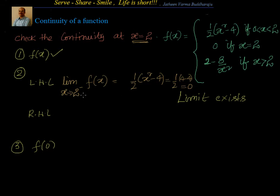What we have done: x tends to 2 minus means the limit is approached from between 0 and 2. The function is given by half into x square minus 4. Substituting x equal to 2, we get left-hand limit equal to 0.